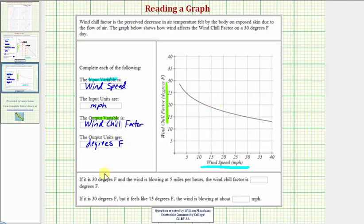Now, we want to use the graph to complete the following two sentences. If it is 30 degrees Fahrenheit, and the wind is blowing at five miles per hour, the windchill factor is what in degrees Fahrenheit?